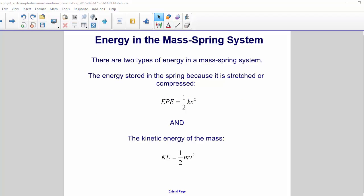There are two types of energy in a mass-spring system. The energy stored in the spring, because it is stretched or compressed, is elastic potential energy, 1 half kx squared. And, since the mass is moving, kinetic energy, 1 half mv squared.